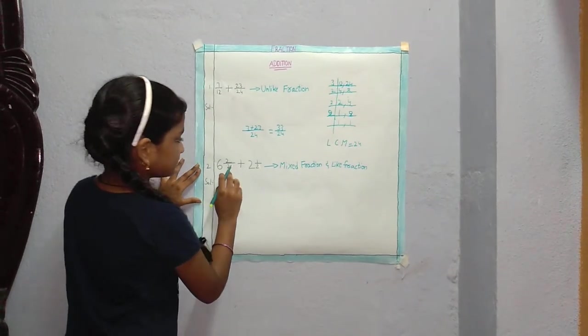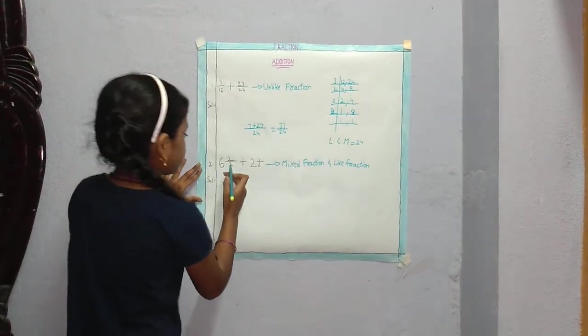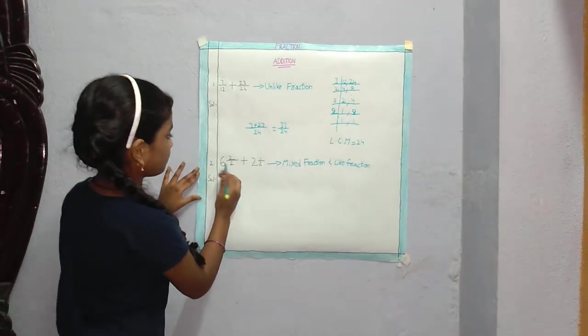Second one. This is mixed fraction and like fraction. We have to convert this first into improper fraction.